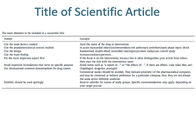Put the most important aspect first. For example, if the focus is on the intervention — because this is what distinguishes your article from others — then start the title with the intervention name. Avoid imprecise formulations that serve no specific purpose, such as 'a report of' or 'the effects of.' If there are effects, state what they are.